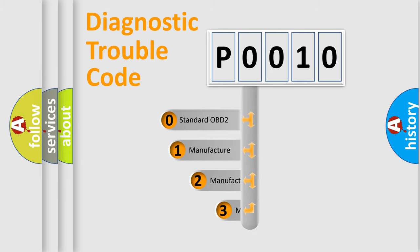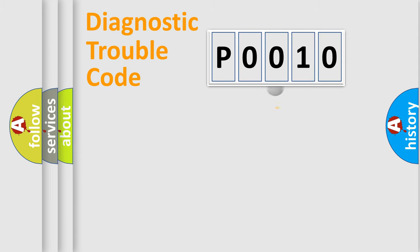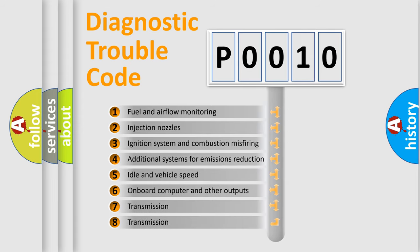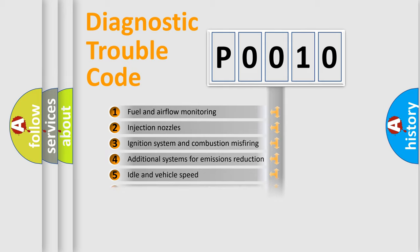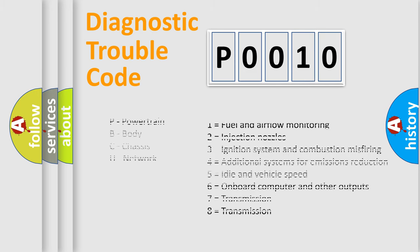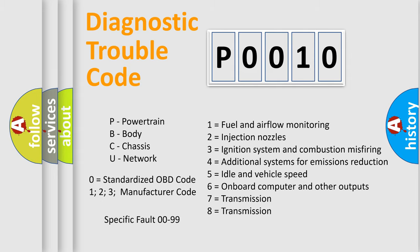If the second character is expressed as zero, it is a standardized error. In the case of numbers 1, 2, 3, it is a manufacturer-specific error. The third character specifies a subset of errors. The distribution shown is valid only for the standardized DTC code. Only the last two characters define the specific fault of the group. Let's not forget that such a division is valid only if the second character code is expressed by the number zero.